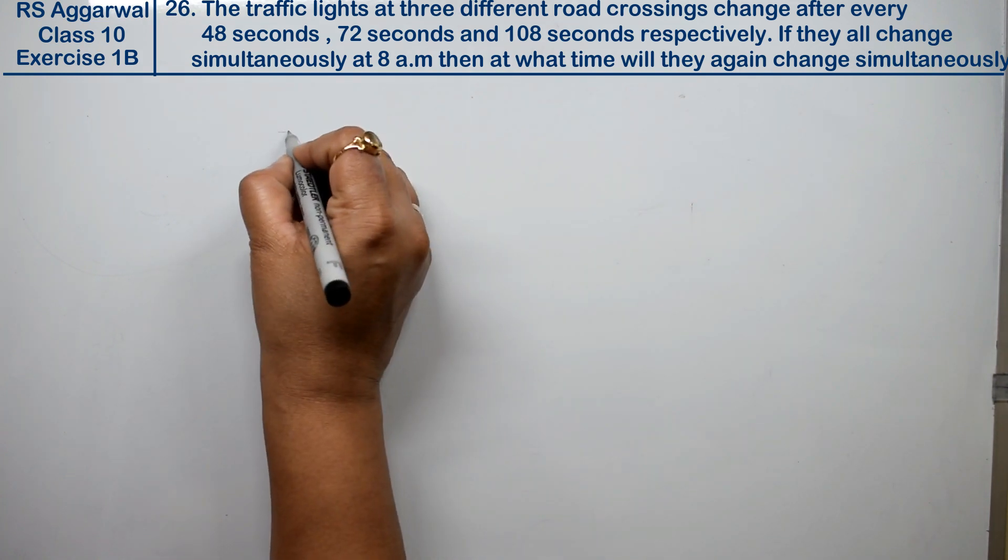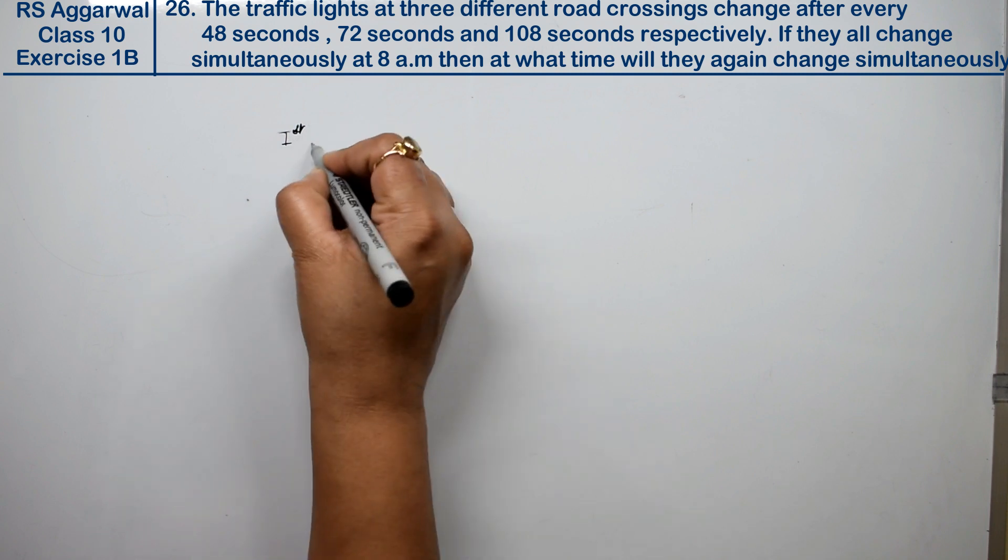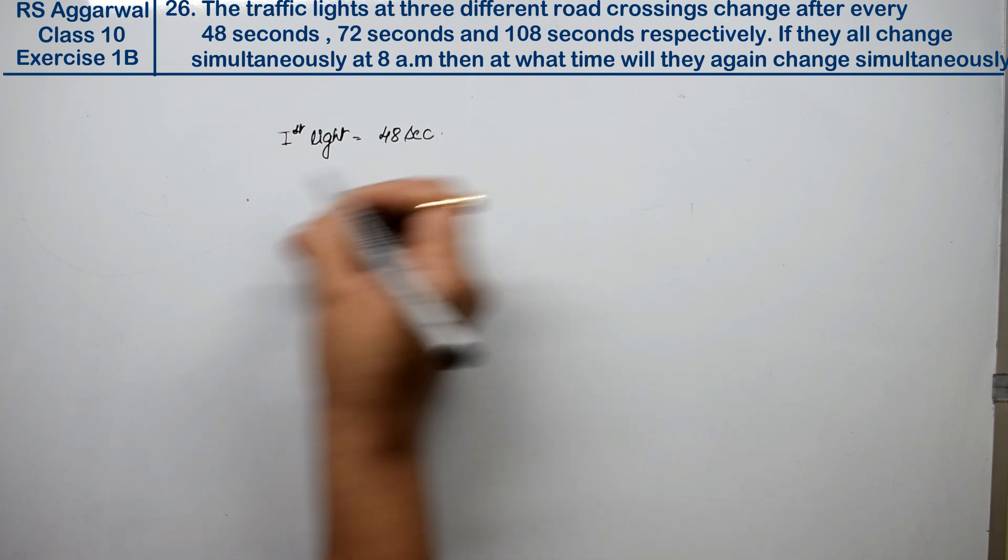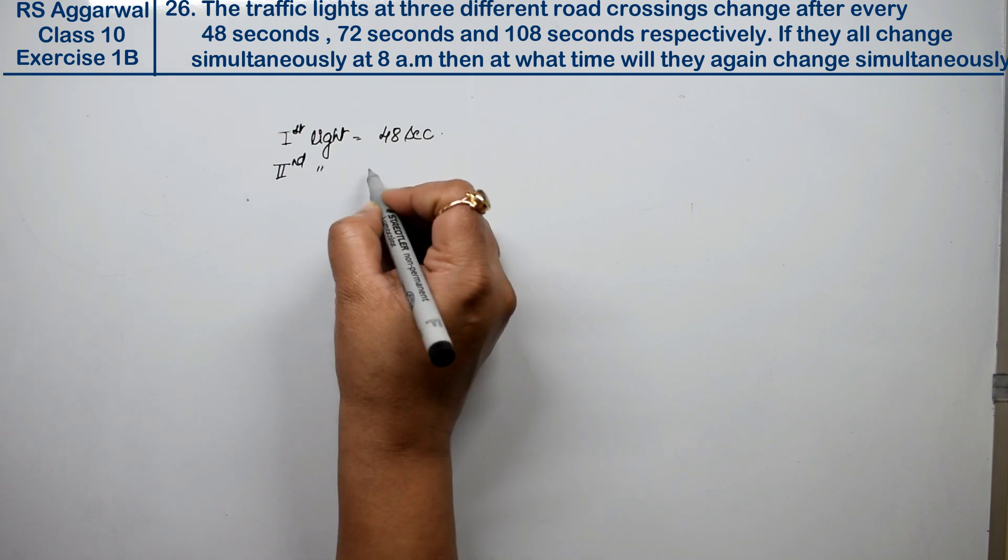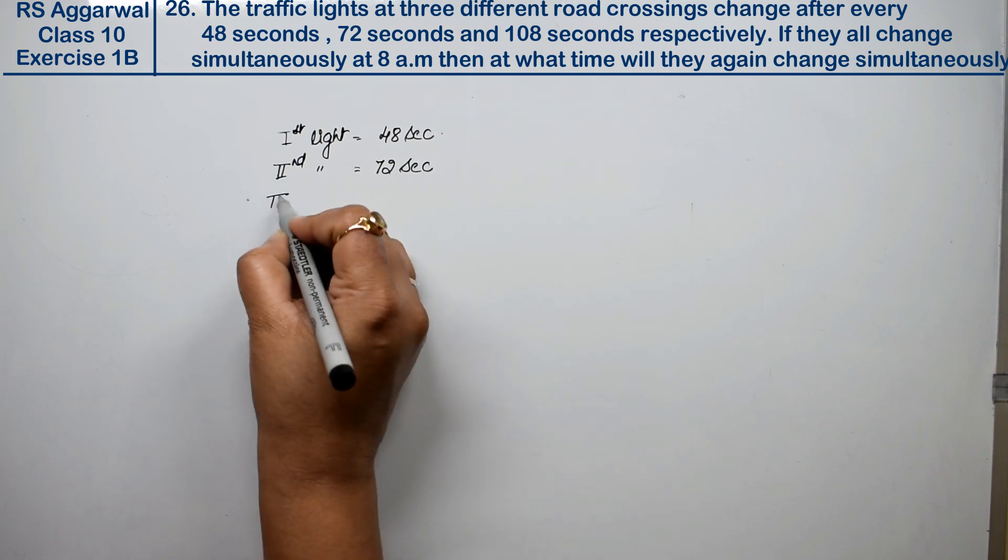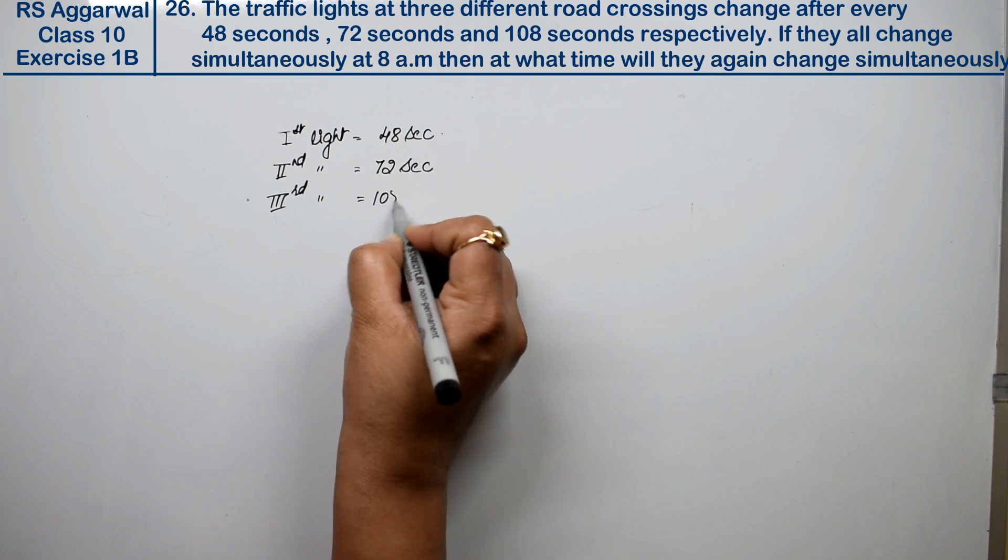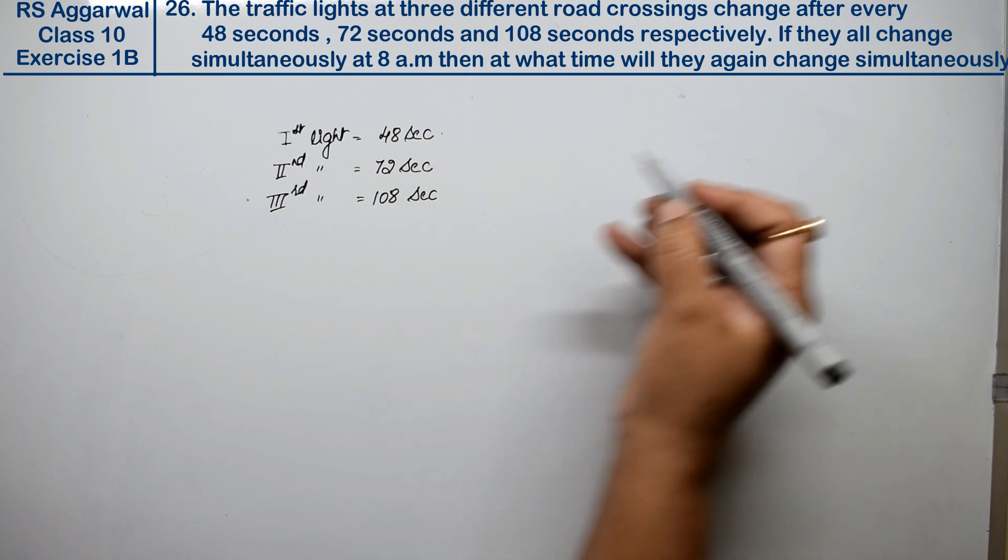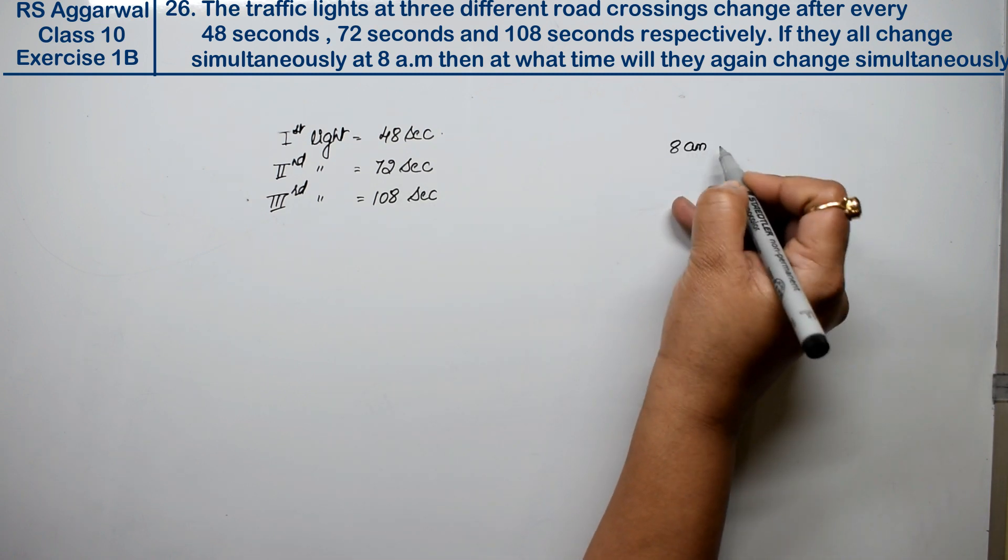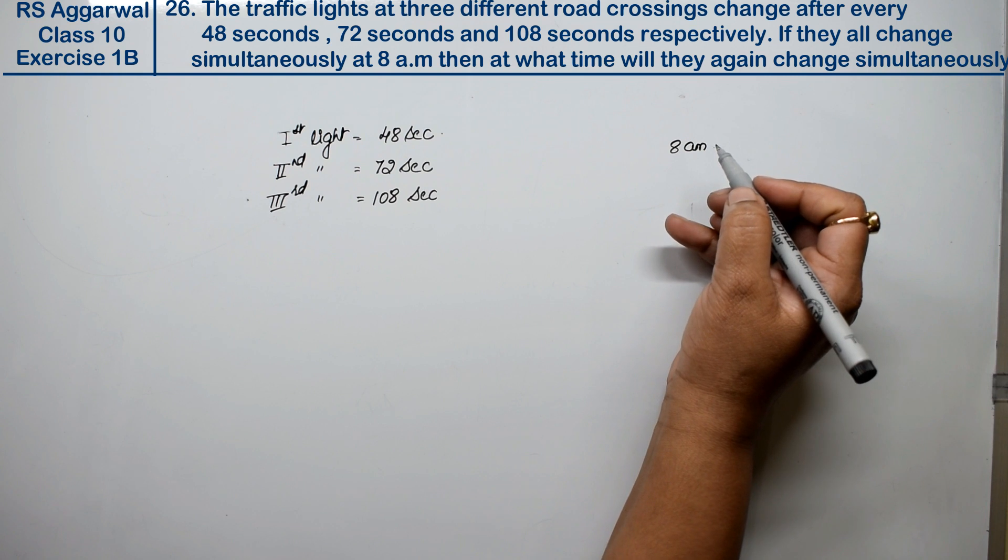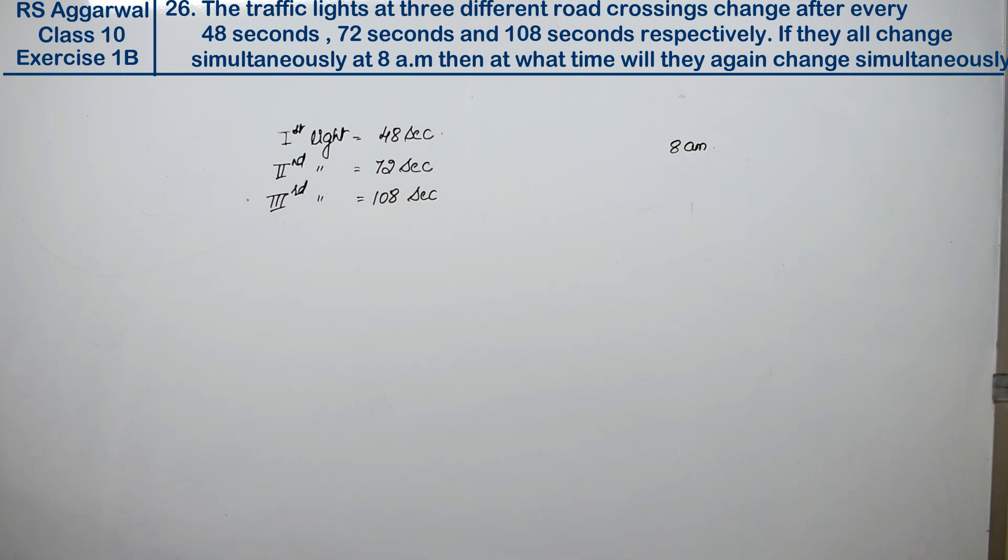First light changes after 48 seconds, second light changes after 72 seconds, and third light changes after 108 seconds. If they all change simultaneously at 8 a.m., then at what time will they again change simultaneously?